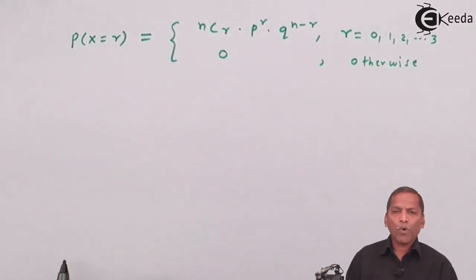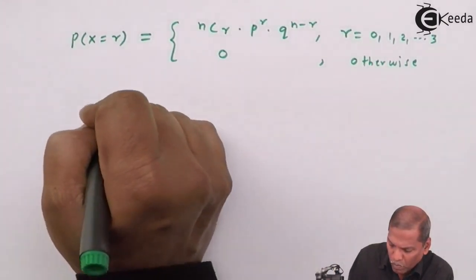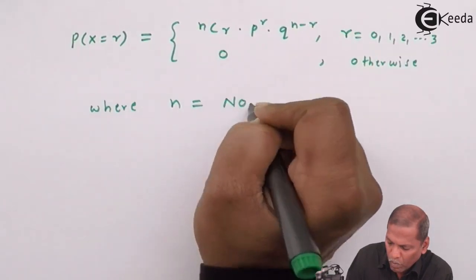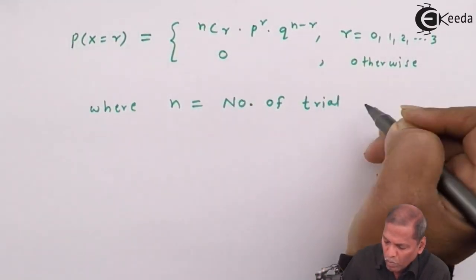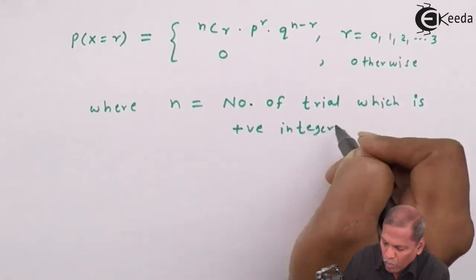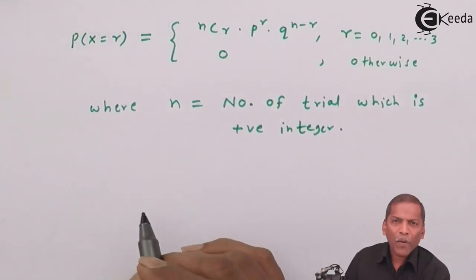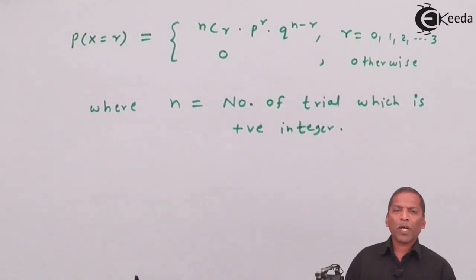Now in this formula, n represents number of trials which is a positive integer. It means it takes only positive values and that should be integer, for example 1, 2, 3, 4, 10, 100, 1000 and so on. Then p represents probability of success.